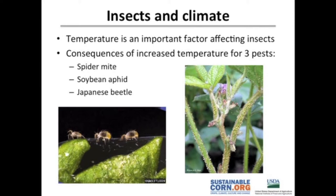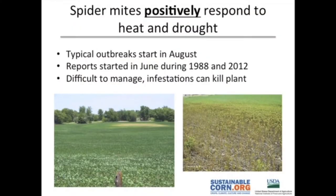In 2012, we've had extreme outbreaks of spider mites. They've occurred earlier in the year than they typically do. Usually spider mites, if they show up, it's going to be later in the season — usually mid-August or even late August. This year, just like in 1988, because of the hot, dry conditions, we've had spider mites show up in early June or mid-June. Parts of fields, or in some cases entire fields, have been hit with spider mites, and these are not the easiest things to manage.